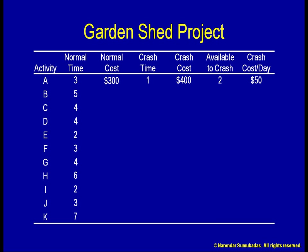Consider two different kinds of expediting. Suppose I need something shipped — I can spend $15 for regular 5-day delivery or $50 for next-day delivery. The only options I have are 1 day or 5 days, all or nothing; I cannot choose 2, 3, or 4 days. On the other hand, suppose I have an activity that involves 5 days of labor. I can choose to use a little bit of overtime to finish in 4 days, or throw in some more overtime to finish in 3 days, or even more to finish in 2 days. That is, I can crash the activity incrementally according to my needs.